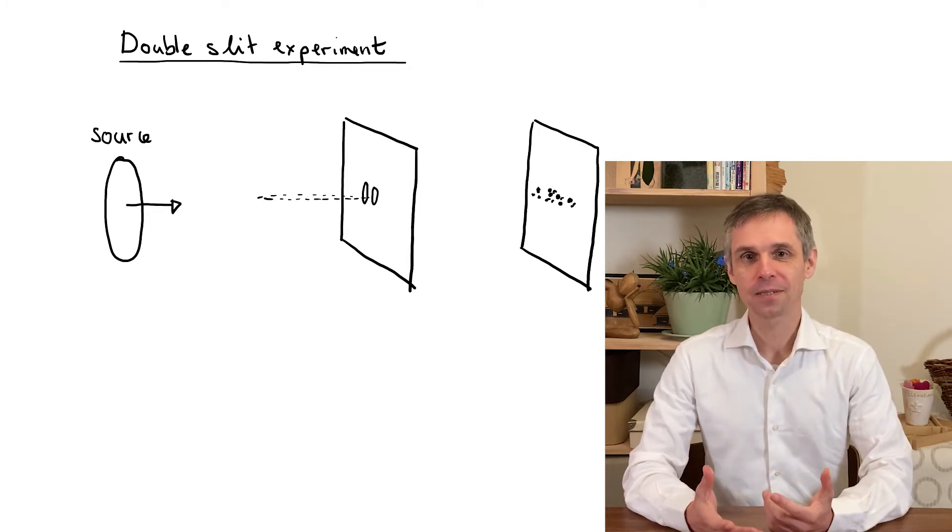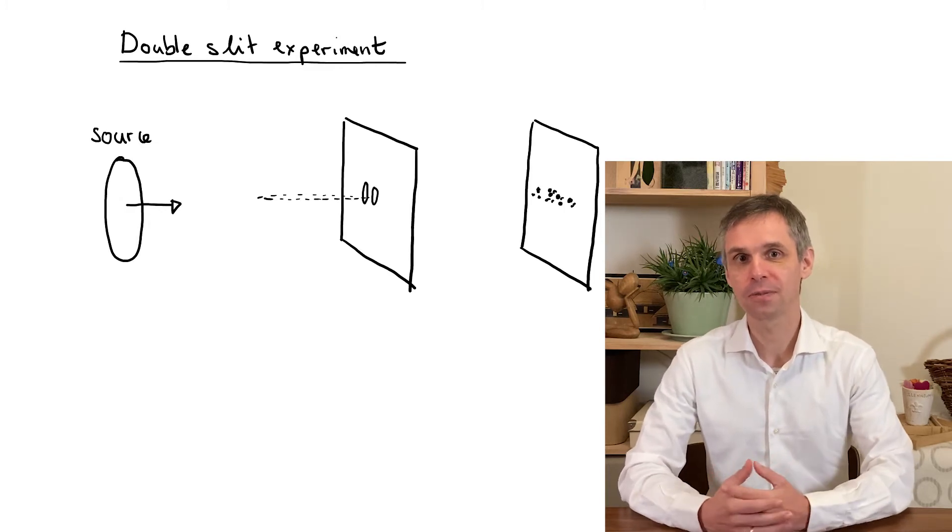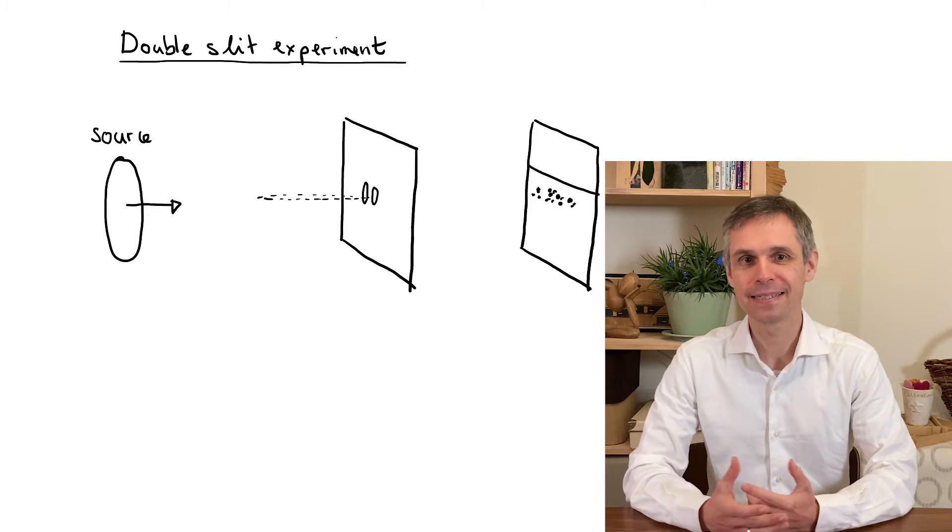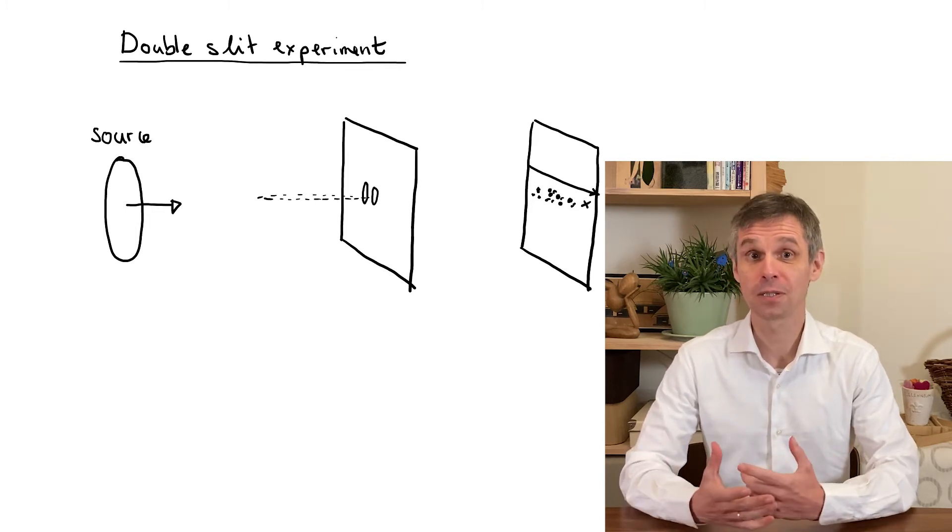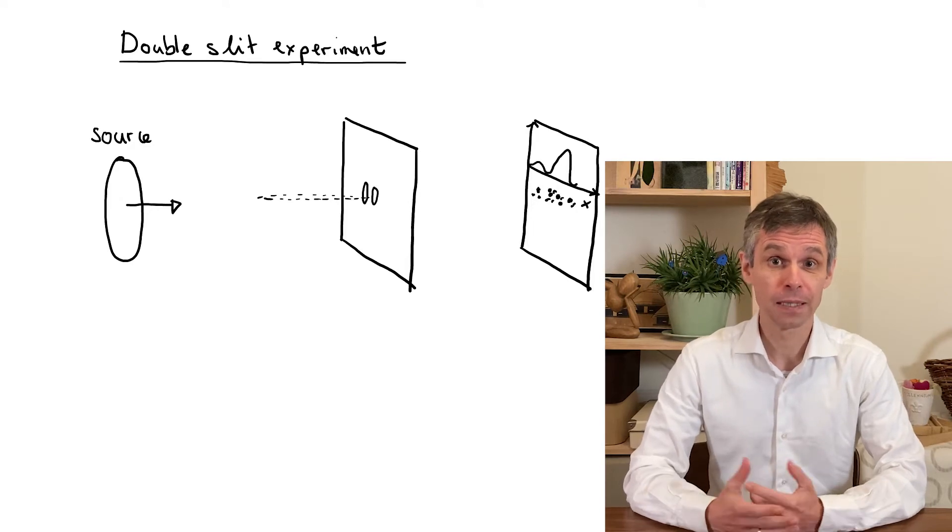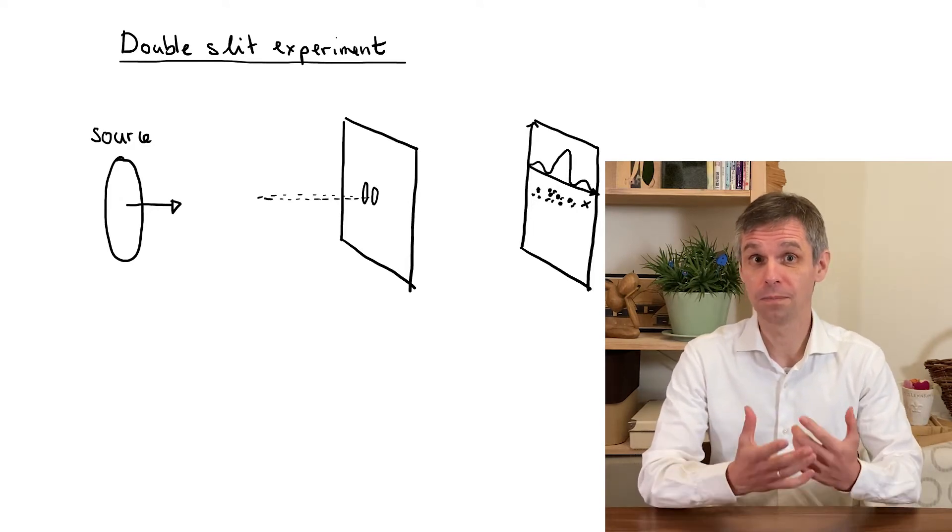As a matter of fact, when we wait for long enough and then make a sort of histogram—collect basically the density of the points on this axis here—we find a pattern that very much looks like the diffraction pattern of a wave. In particular, we find many particles arriving close to the middle of the screen, which is really in the shadow of the slits.